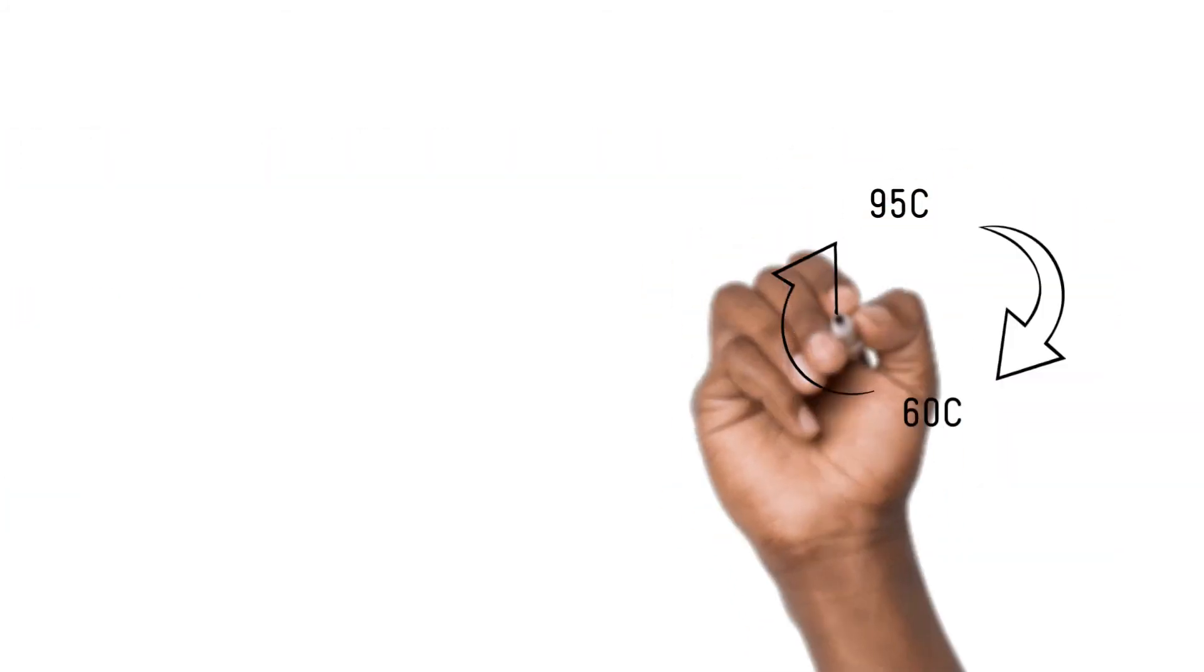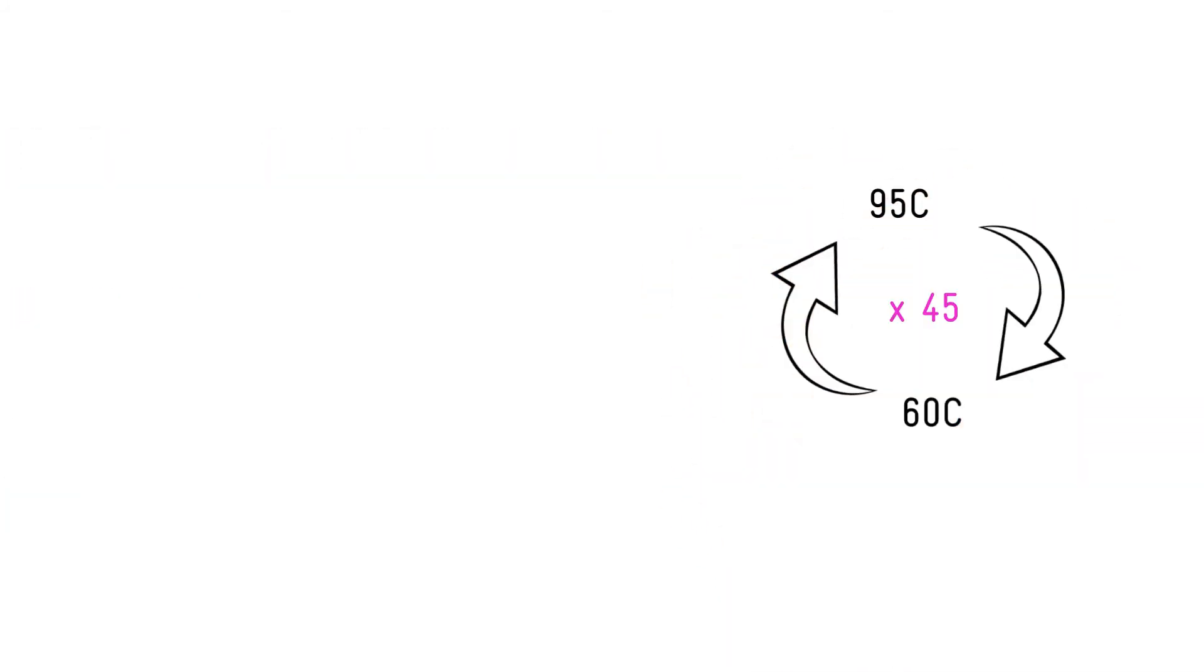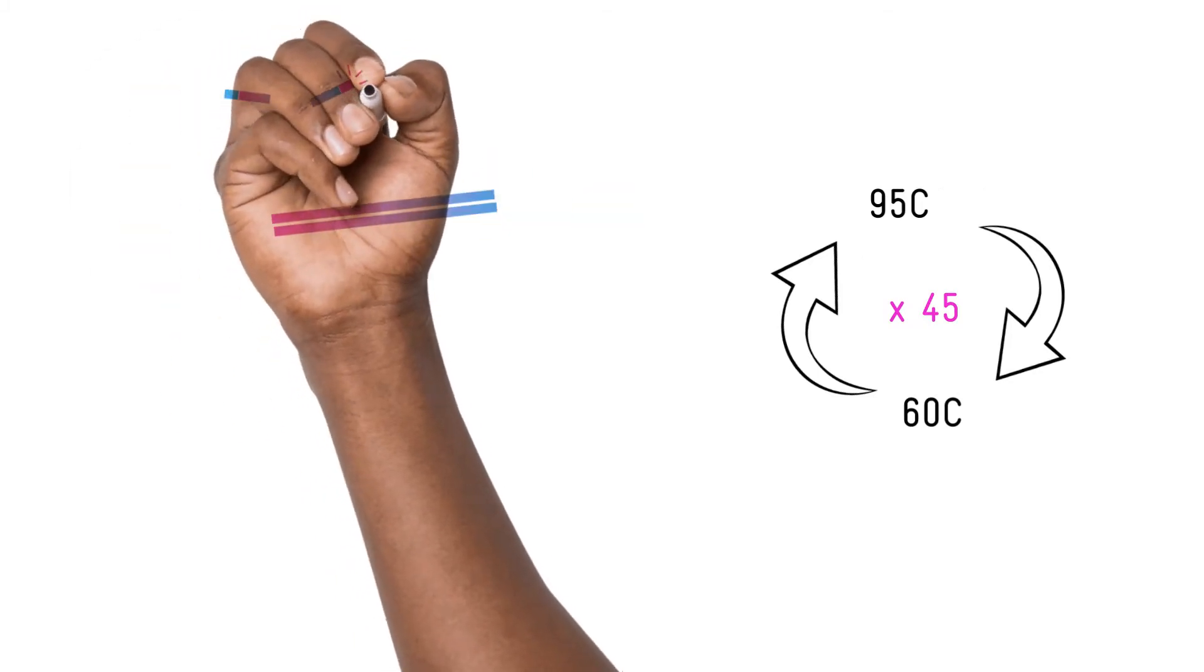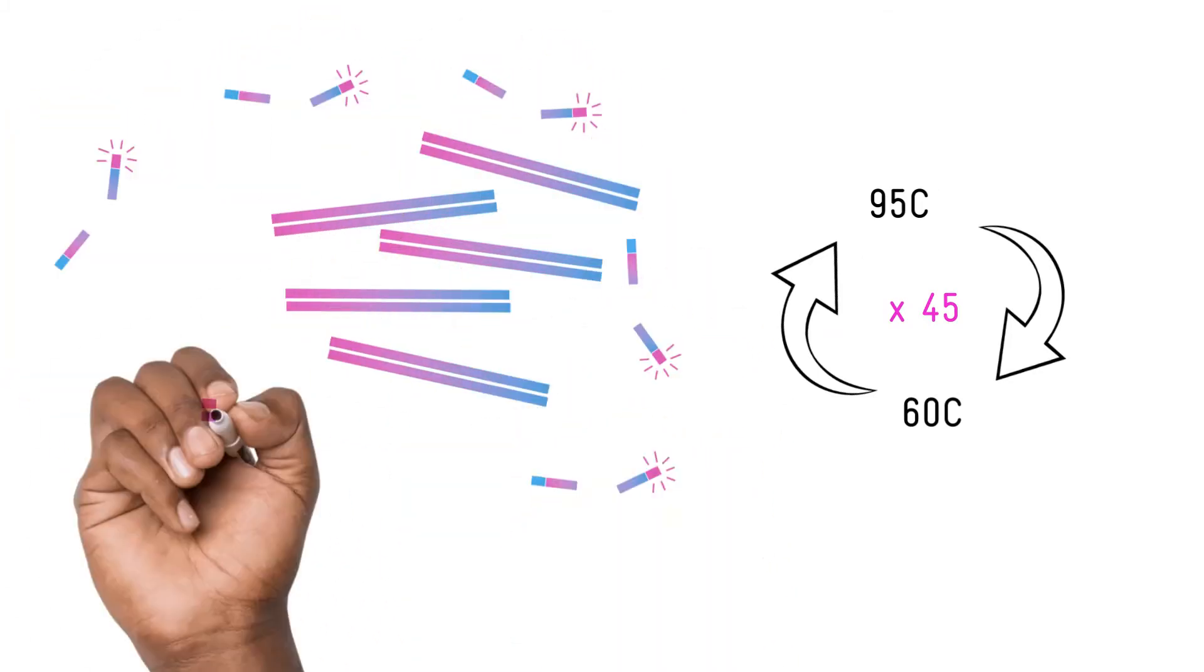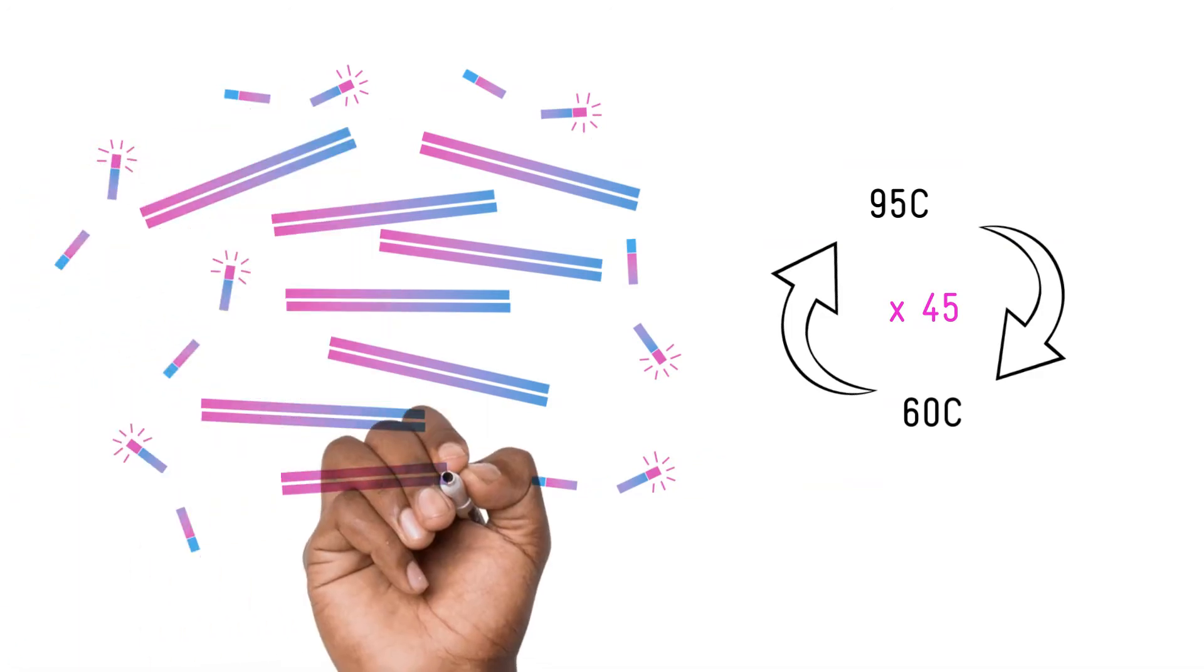By heating and cooling the reaction 40 or 50 times, this chain reaction will amplify the target DNA millions of times, giving off a bright colored signal that can be monitored by a camera in real time.